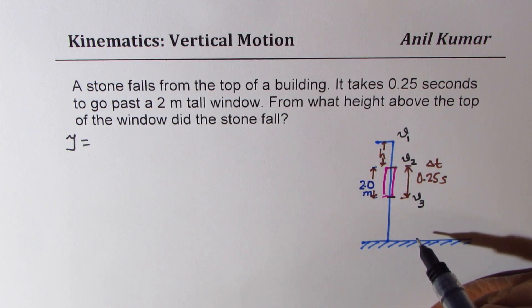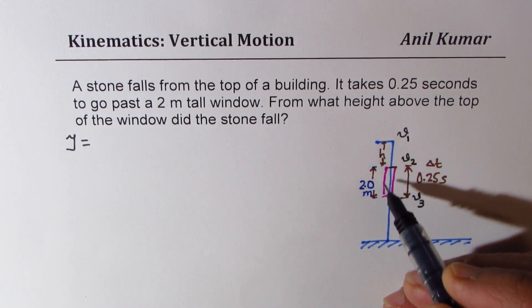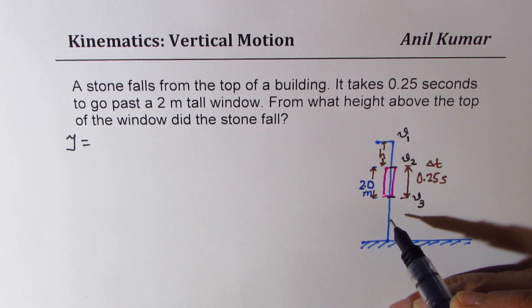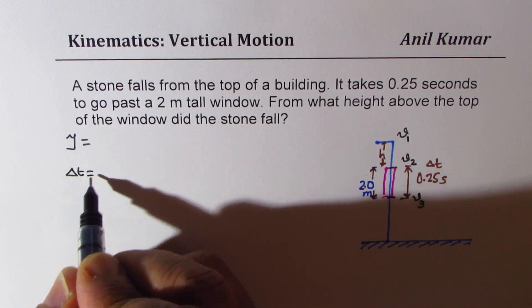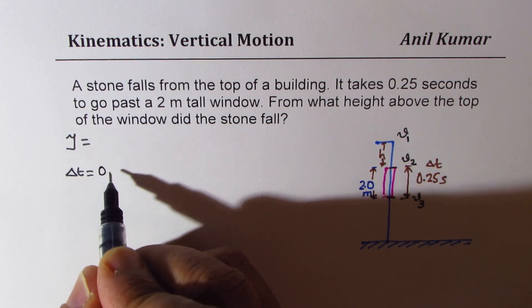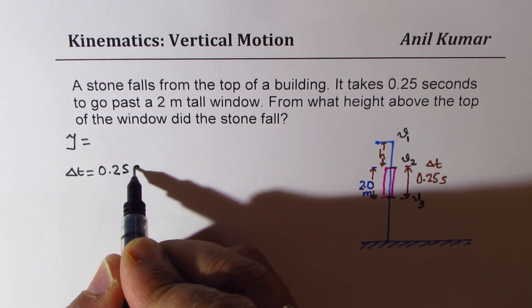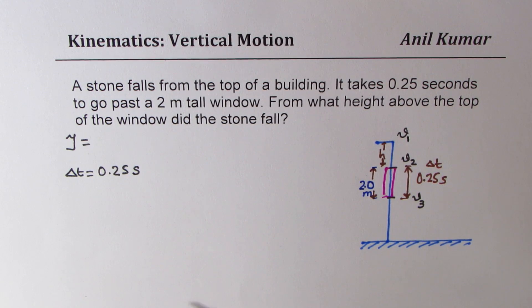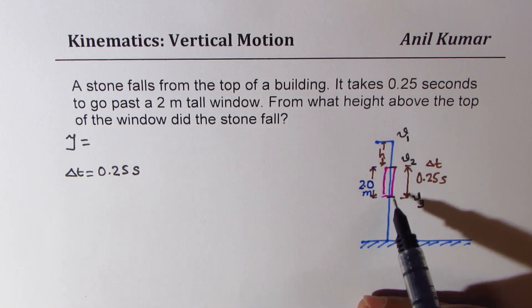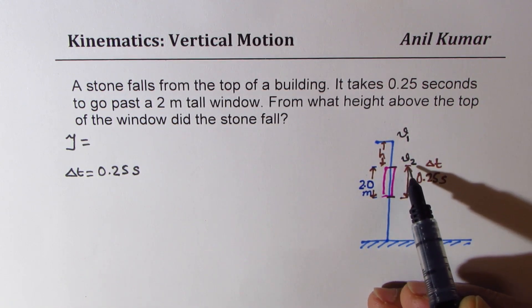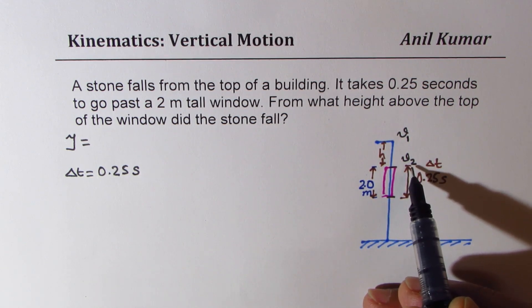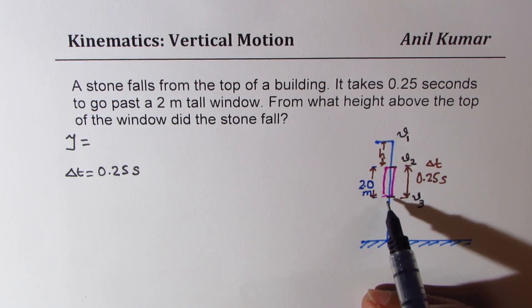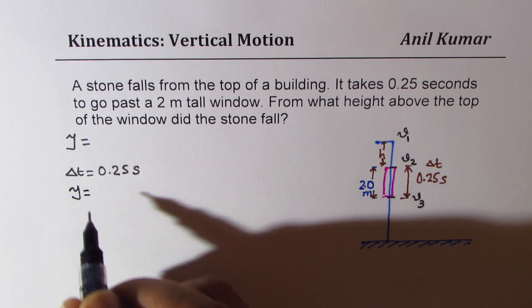Since it is going downwards, they will be negative. Distance going downwards will also be considered negative. In this case, delta t equals 0.25 seconds when it falls through this distance. We can find initial velocity at this time using the height given to us.